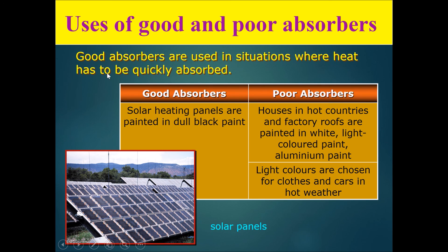Absorbers are used in situations where heat has to be quickly absorbed, so solar heating panels are always dull and black so they can absorb radiation from the sun faster. Houses in hot countries are always painted white or pastel — for example, HDB blocks in Singapore. In hot weather, you will likely choose light colors for clothes and cars, because in the day they absorb radiation at a slower rate from the sun and therefore become less hot.